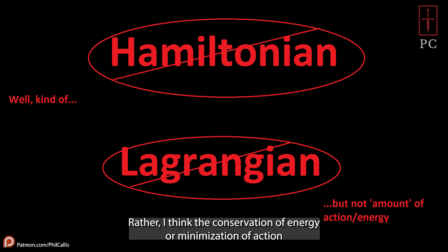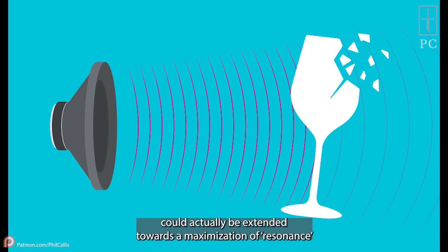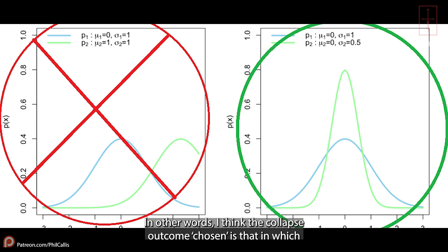Rather, I think the conservation of energy, or minimization of action, could actually be extended towards a maximization of resonance between local curvature and non-local accelerations. In other words, I think the collapse outcome chosen is that in which the effective Rindler horizon looks most like the spatial curvature.